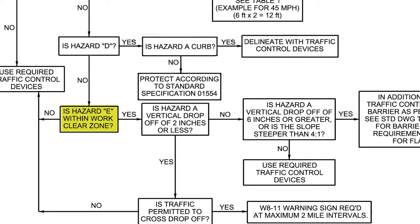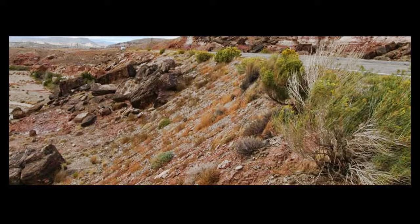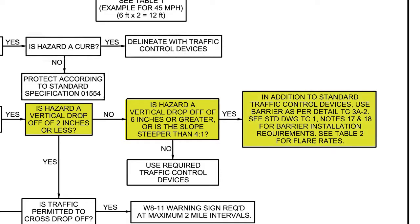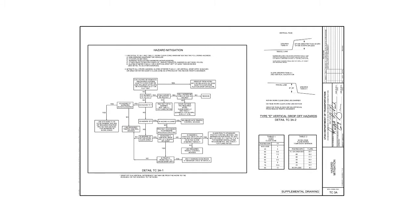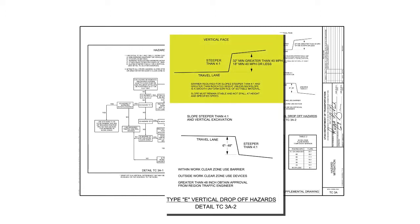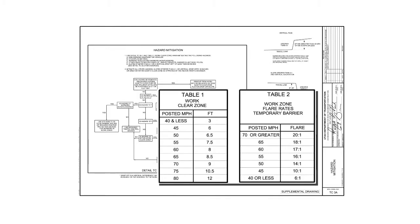Hazard Type E: is the hazard within the work clear zone? If yes, is the hazard a vertical drop-off of 2 inches or less? If no, is the hazard a vertical drop-off of 6 inches or greater, or is the slope steeper than 4 to 1? If no, use the required traffic control devices. If yes, in addition to standard traffic control devices, use barrier according to Detail TC3A-2. Also see TC1 Notes 17 and 18 for barrier installation requirements and Table 2 for flare rates. Detail TC3A-2 instructs us how to deal with back slopes with vertical face steeper than 4 to 1 and how to handle floor slopes steeper than 4 to 1 or vertical excavations. Table 1 Work Clear Zone and Table 2 for work zone flare rates for temporary barrier are also needed to properly deal with Type E hazards.